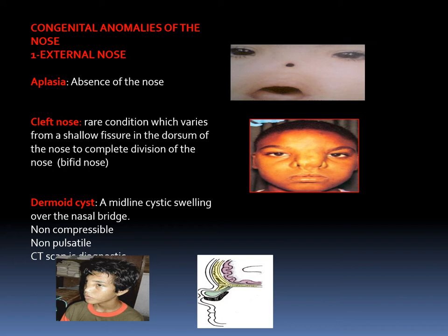There are also congenital anomalies such as absence of the nose (aplasia) or cleft nose, a very rare condition ranging from a shallow fissure of the dorsum to complete division — a bifid nose. Another congenital anomaly is the dermoid cyst: a midline cystic swelling over the nasal bridge, which is non-compressible, non-pulsatile, and diagnosed by CT scan.